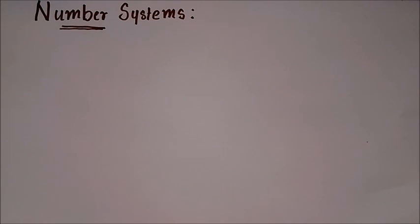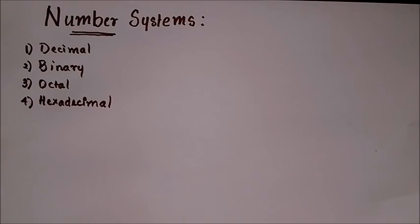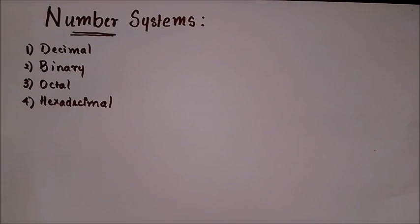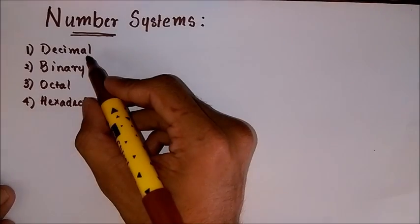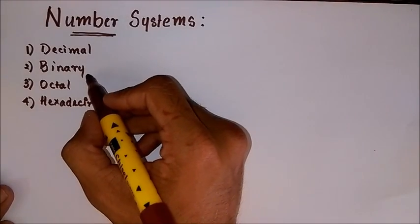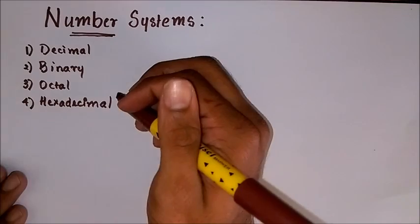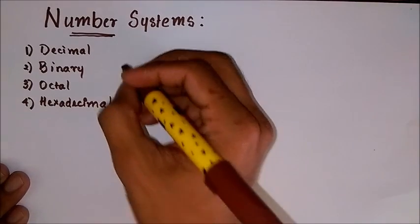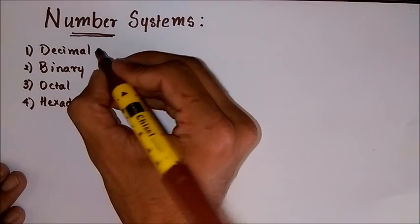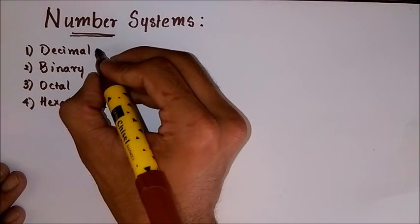Hello everyone, this is Edionic. In this tutorial we are going to learn how to convert from one number system to another. As you may know, there are four different number systems: the decimal number system, the binary, the octal, and the hexadecimal number system. Each one has a different base.